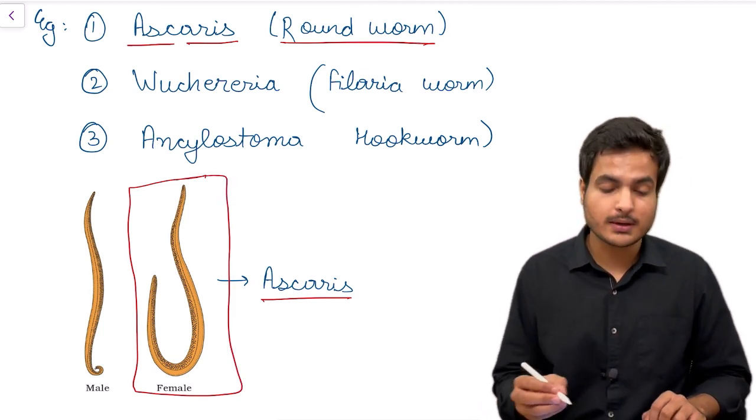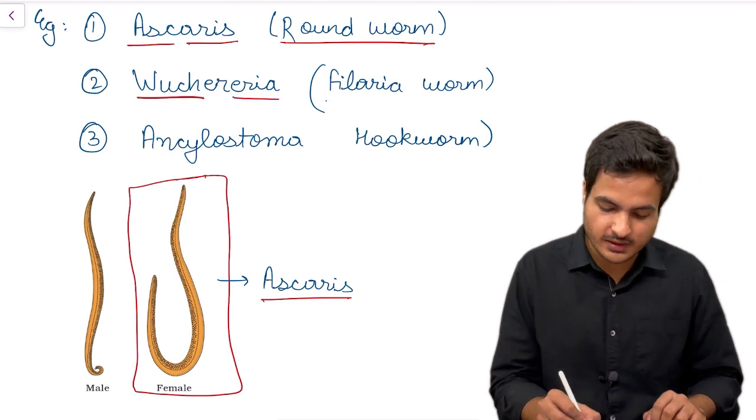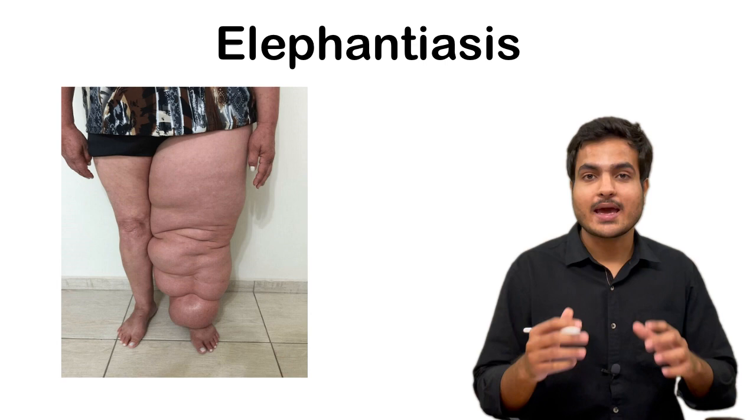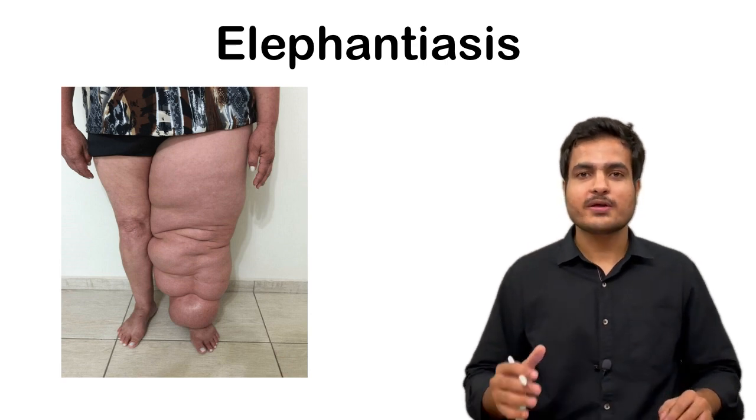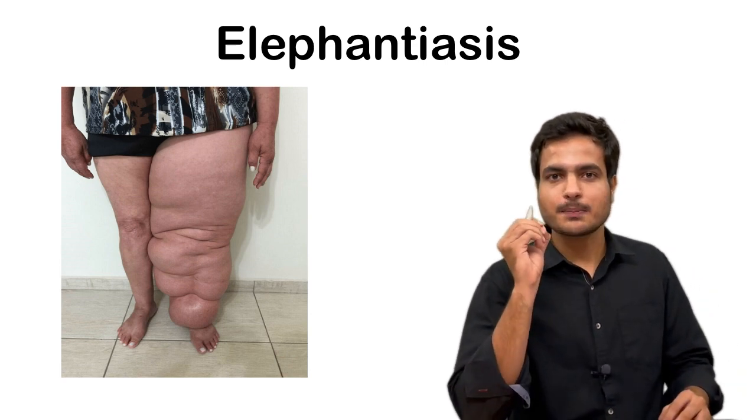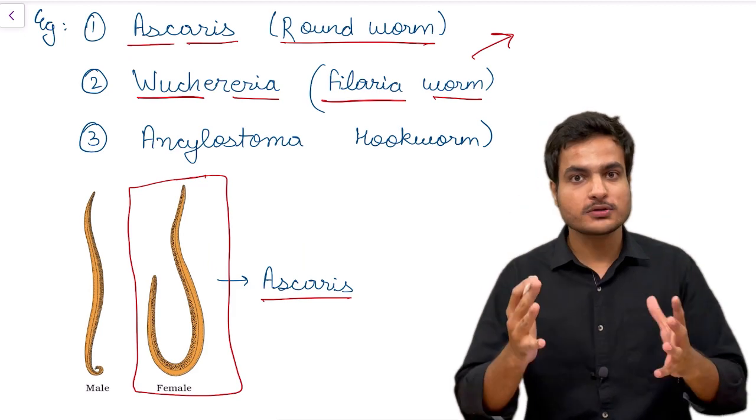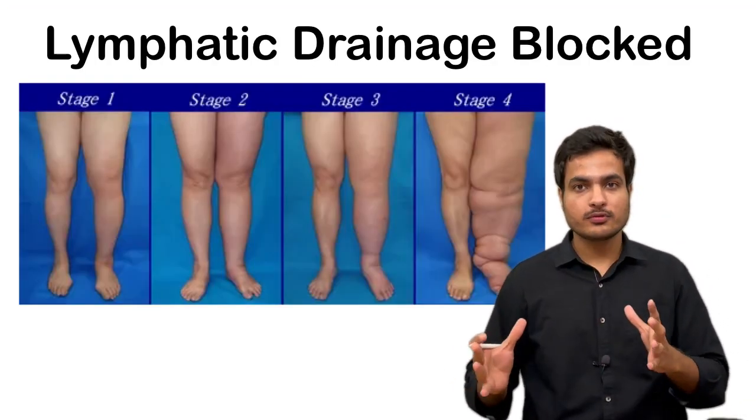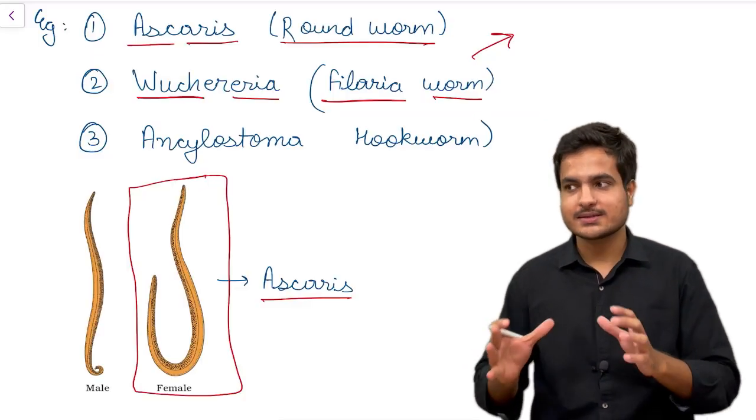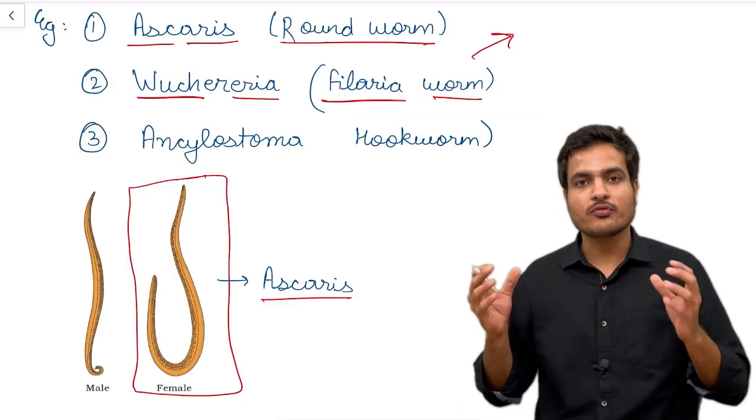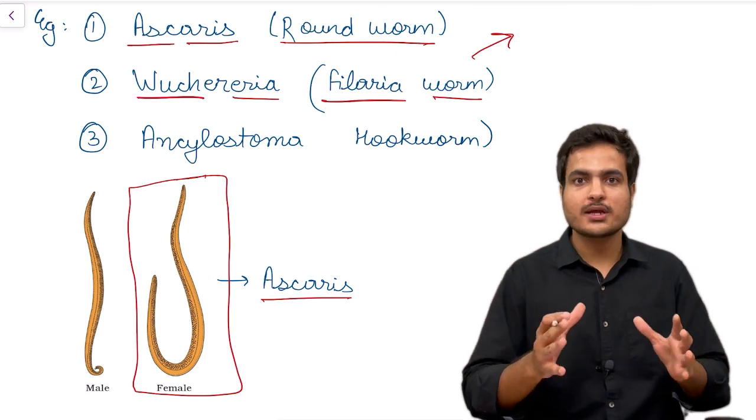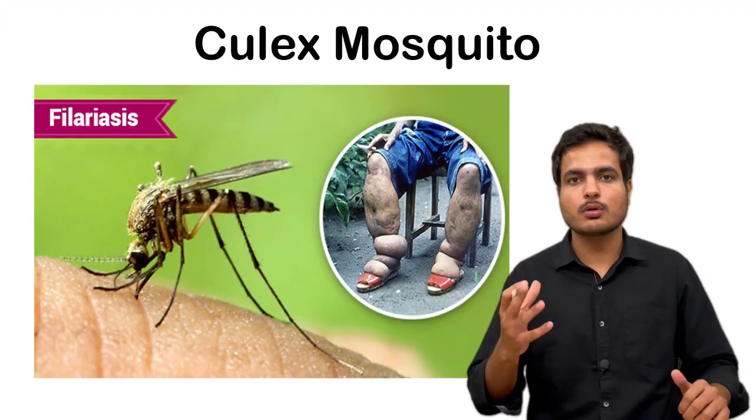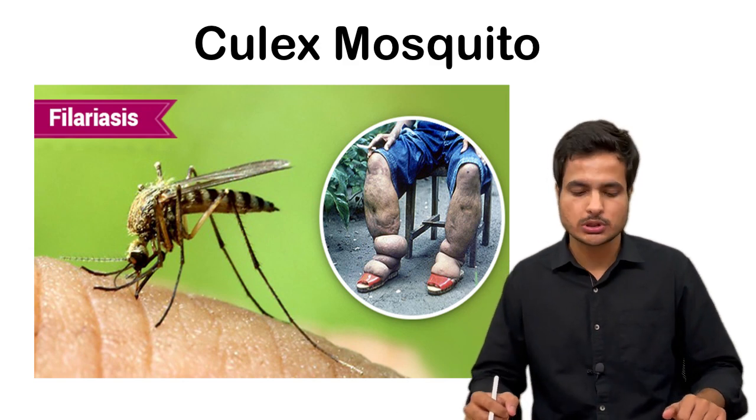Second we have Wuchereria which is a filarial worm. This causes elephantiasis, that means whenever this enters the body of a human it blocks the lymphatic drainage and that leads to swelling up of the leg of that person as that resembles like a leg of an elephant. Therefore it is called elephantiasis and this is delivered to the human body through a mosquito, that is Culex mosquito.